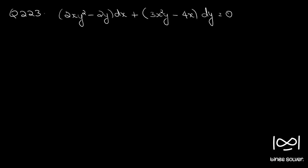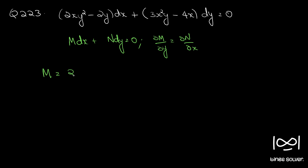Question number 223. The differential equation is 2xy² minus 2y dx plus 3x²y minus 4x dy equals 0. The given differential equation is in the form M dx plus N dy equal to 0, where M is 2xy² minus 2y and N is 3x²y minus 4x.